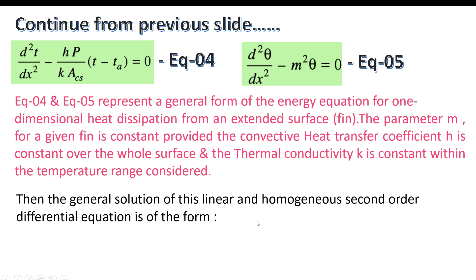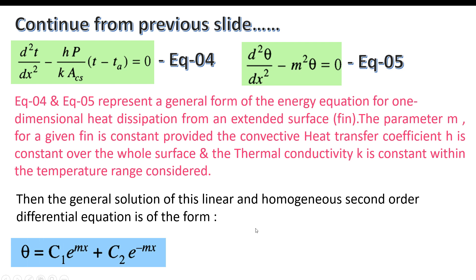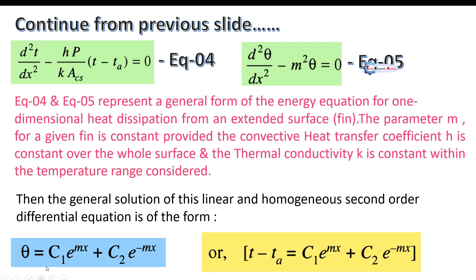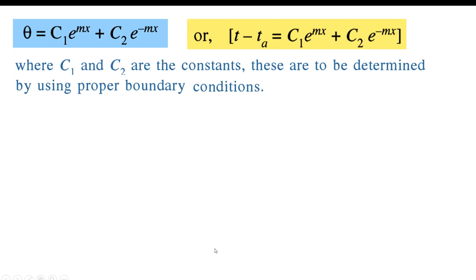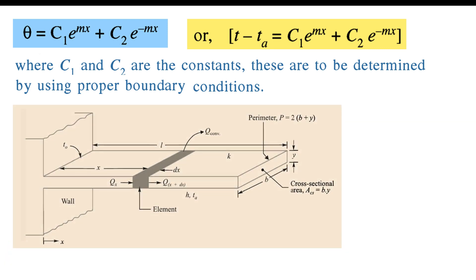The general solution of this linear, homogeneous second-order differential equation is: θ = C1·e^(mx) + C2·e^(-mx), or equivalently T - Ta = C1·e^(mx) + C2·e^(-mx). Here C1 and C2 are constants to be determined using the appropriate boundary conditions.